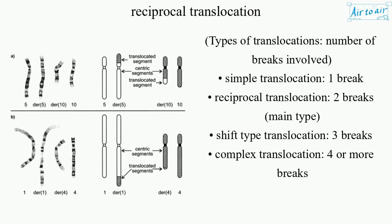Types of Translocations by number of breaks involved: simple translocation — one break; reciprocal translocation — two breaks, the main type; shift type translocation — three breaks; complex translocation — four or more breaks.